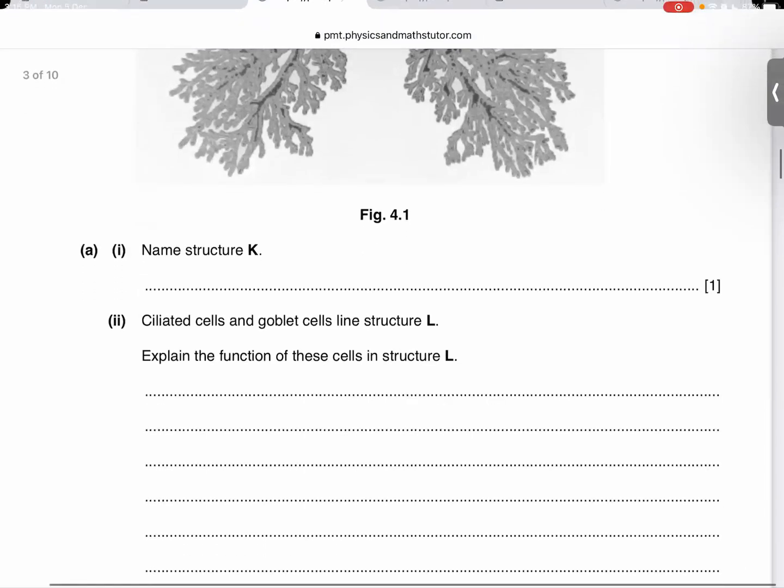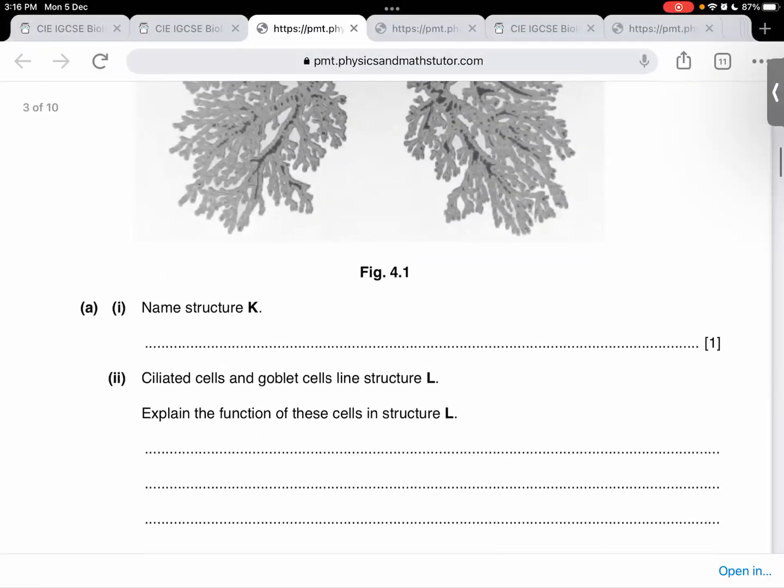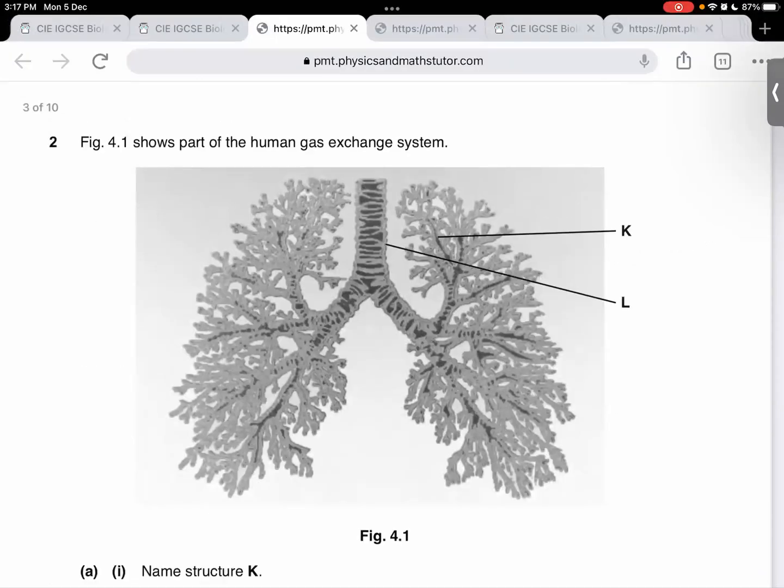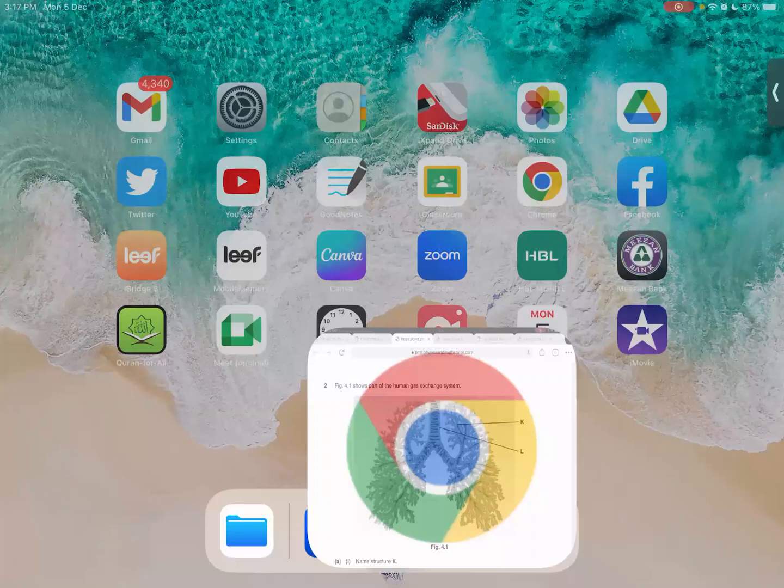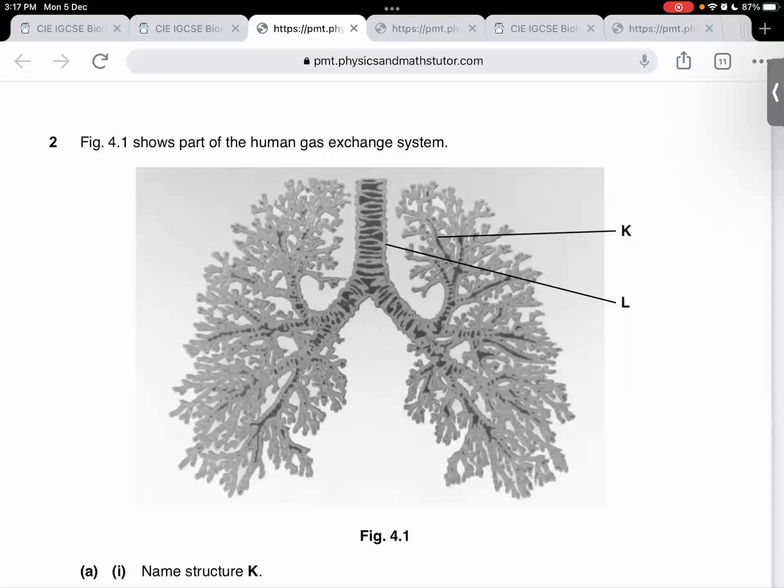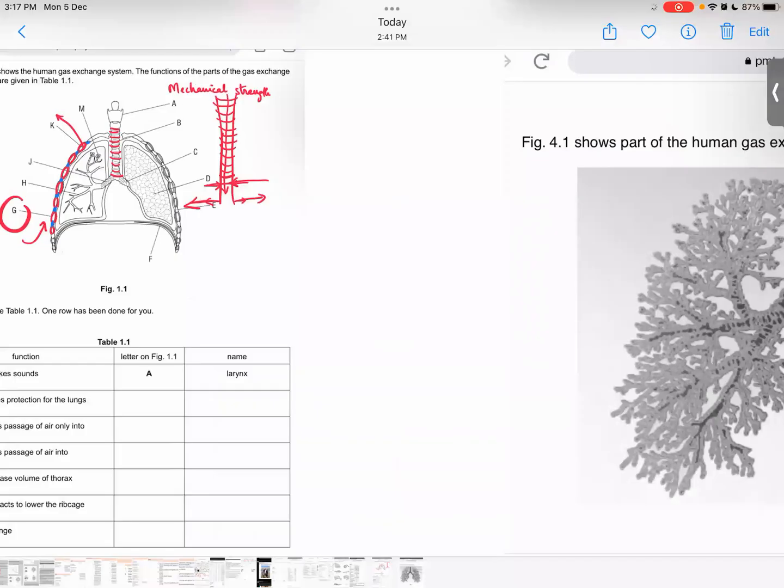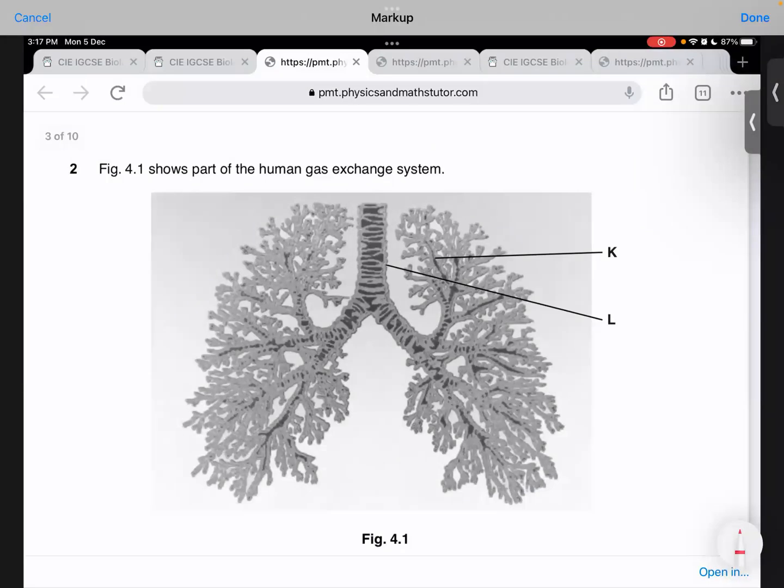Goblet cells make mucus. And this mucus is a sticky substance that's going to trap the dust. So, the first stage should be that the dust should be trapped by the mucus. Once it is trapped, then it will be swept away in a rhythmic manner by the cilia. And what is the direction of sweeping away? Is it upwards or is it downwards?